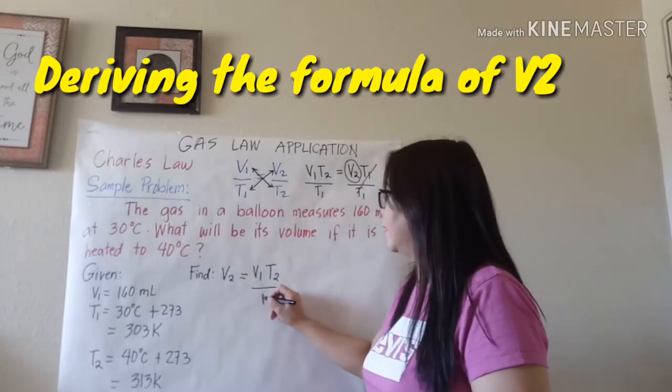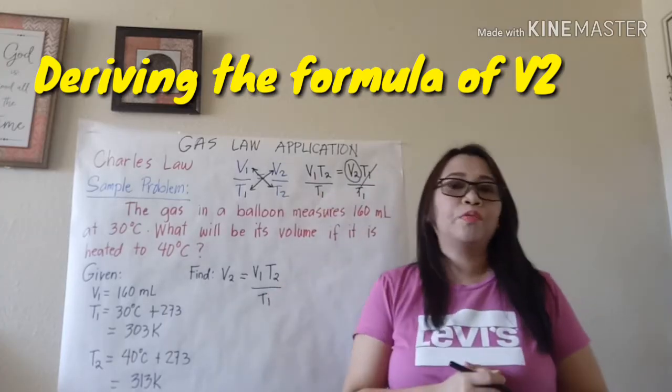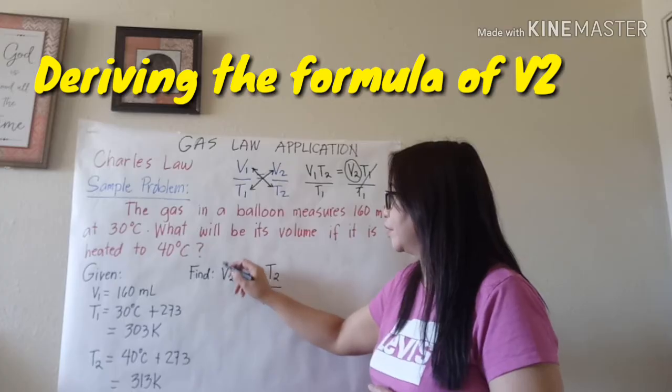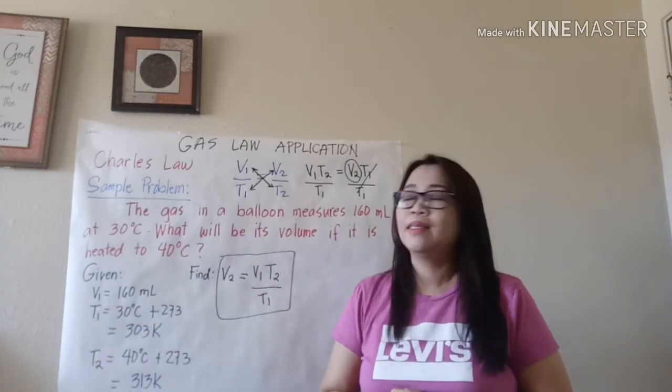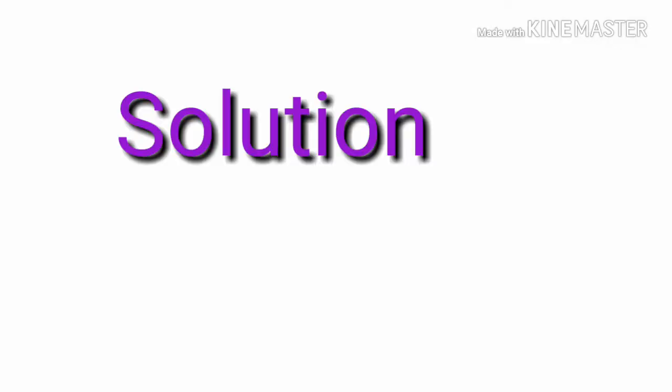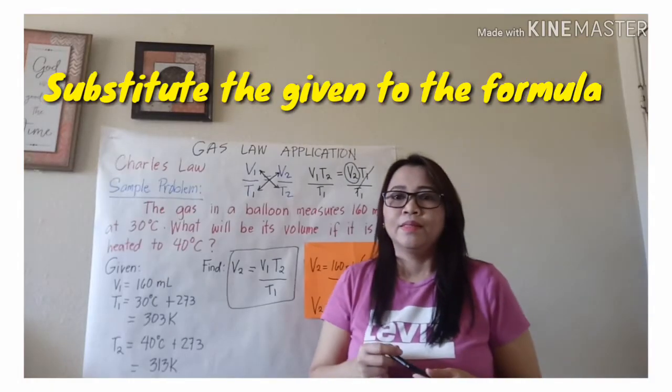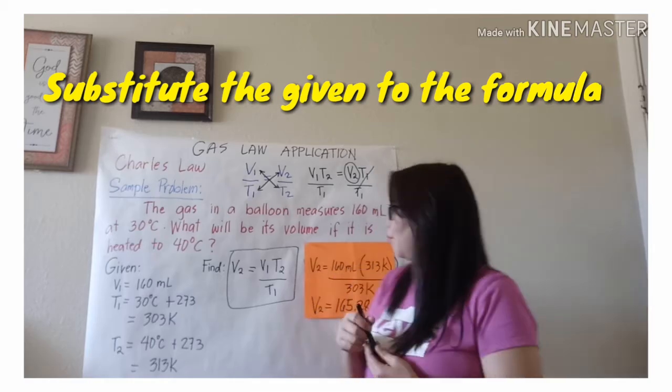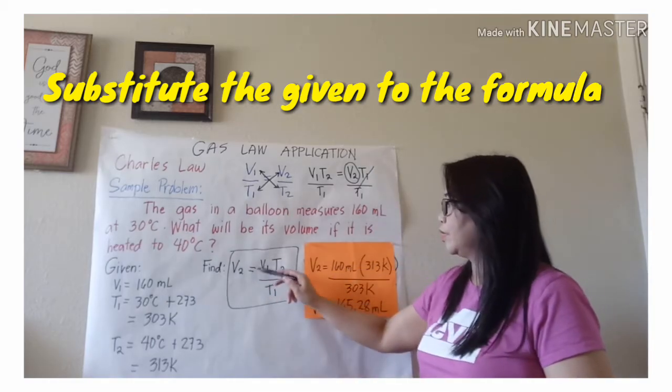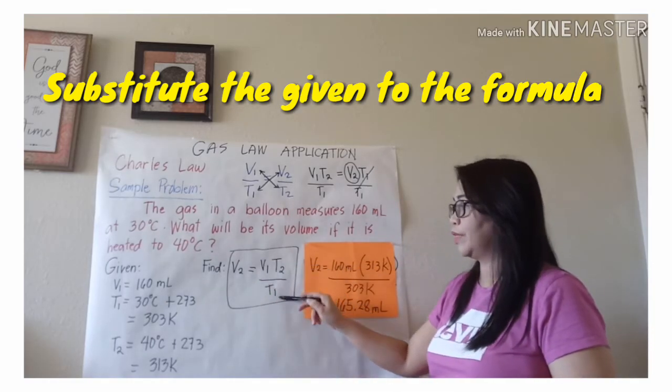So our formula for V2 is equal to V1 times T2 all over T1. So we have now the formula for V2, which is V1 times T2 over T1. All right. So next, we're going to plug in the given. So our formula is V2 equals V1 times T2 over T1.